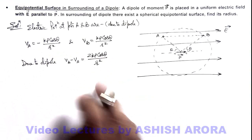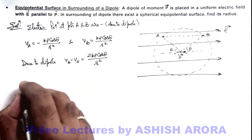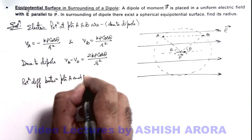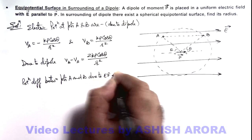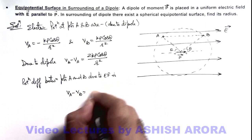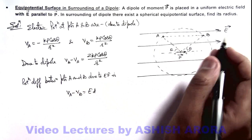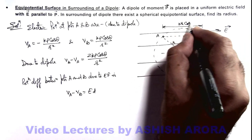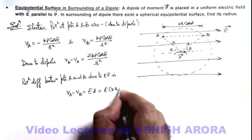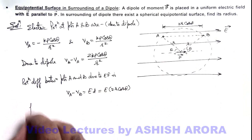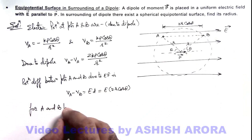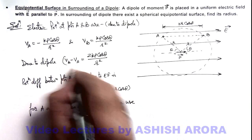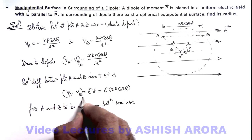This is the increase in potential due to the dipole. Now calculating the potential difference between points A and B due to the external electric field: V_A minus V_B equals E·d, where d is the separation between the two points for the uniform field. This separation can be directly given as 2·r·cos(theta), so the potential difference is E multiplied by 2·r·cos(theta). For A and B to be at the same potential, these two potential differences must be equal.